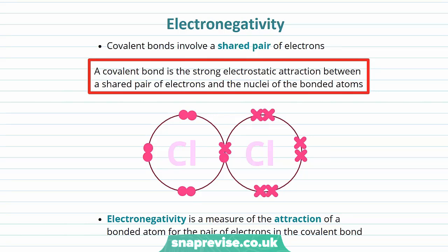First, let's recap our understanding of a covalent bond. A covalent bond involves a shared pair of electrons and is a strong electrostatic attraction between a shared pair of electrons and the nuclei of bonded atoms. Electronegativity is a measure of the attraction of a bonded atom for the pair of electrons in the covalent bond.